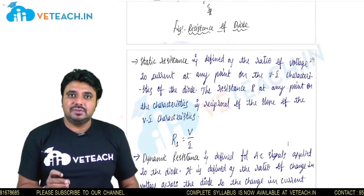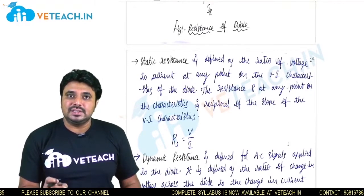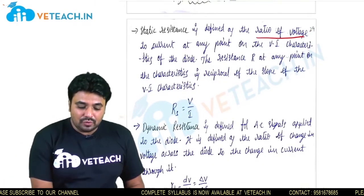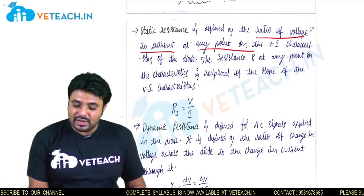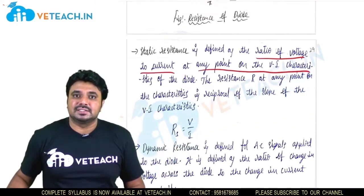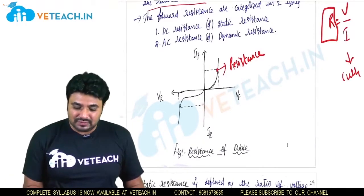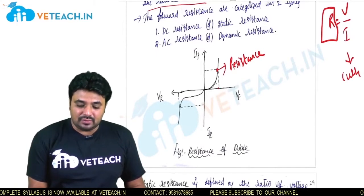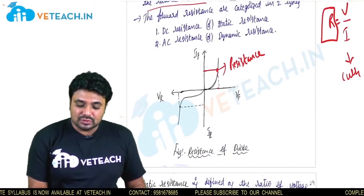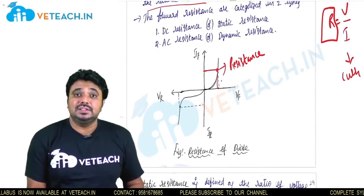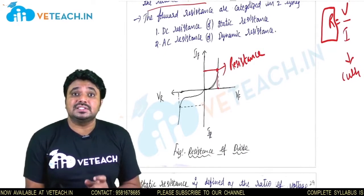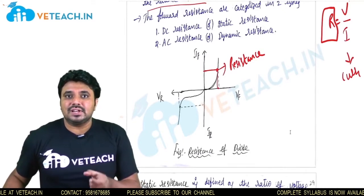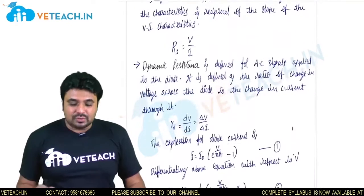Static resistance means DC resistance. The static resistance is the ratio of voltage to current at any point on the VI characteristics. It is a fixed one — fixed voltage and fixed current. For example, at a fixed voltage you get a fixed current, and that ratio gives the resistance. Since it is fixed, we say it is static resistance. We get static resistance whenever both voltage and current are static.